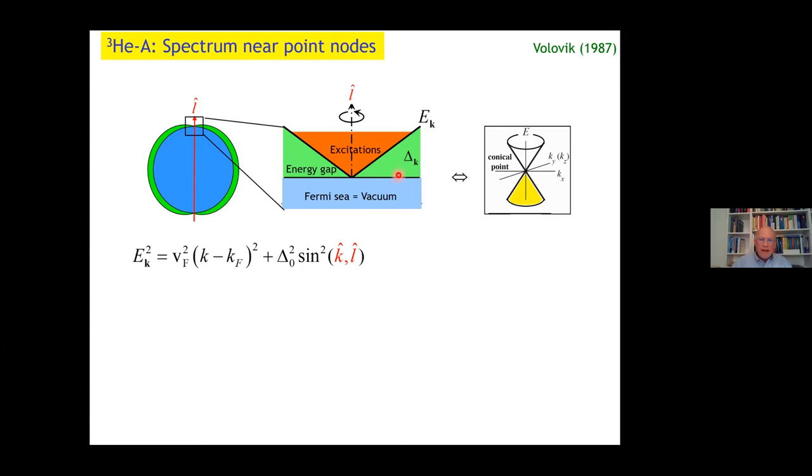Let's look a little more into the spectrum near the point nodes of helium-3A. We zoom in here. The blue is the Fermi sea, which we can call the vacuum. This is the energy gap, and these are the excitations. The Bogoliubov quasi-particle energy is given by the usual expression. This should be seen three-dimensionally, this is actually a conical point. In fact, because of the linear dispersion, this is a so-called Weyl point, as introduced by Weyl. It's topologically protected by the topology of that phase.